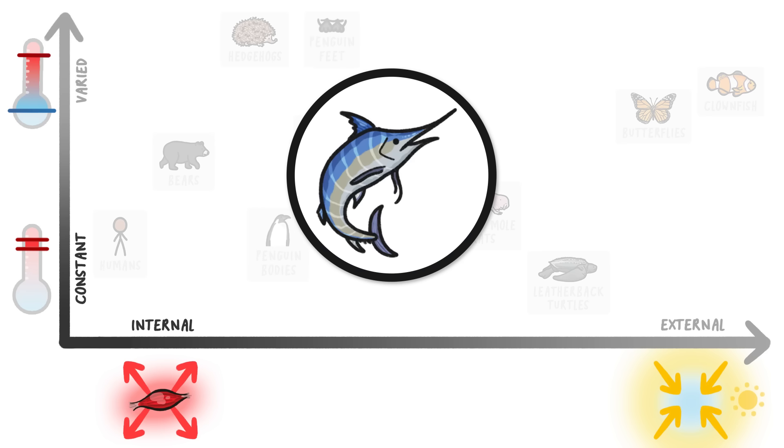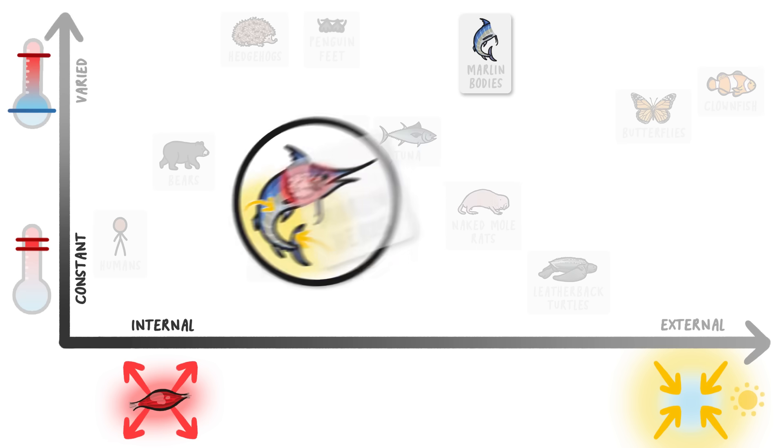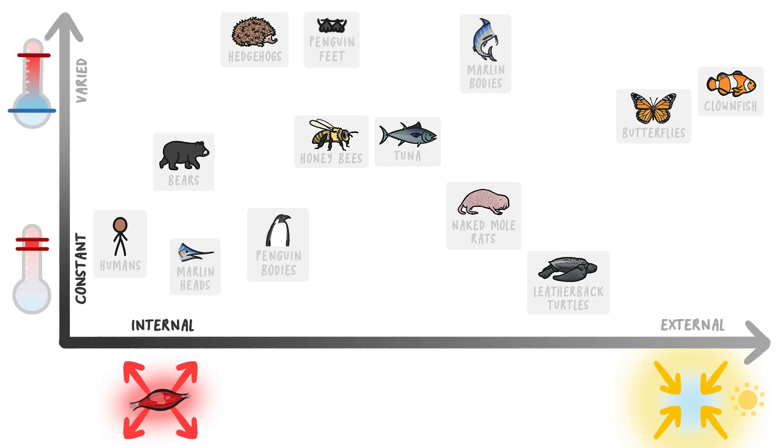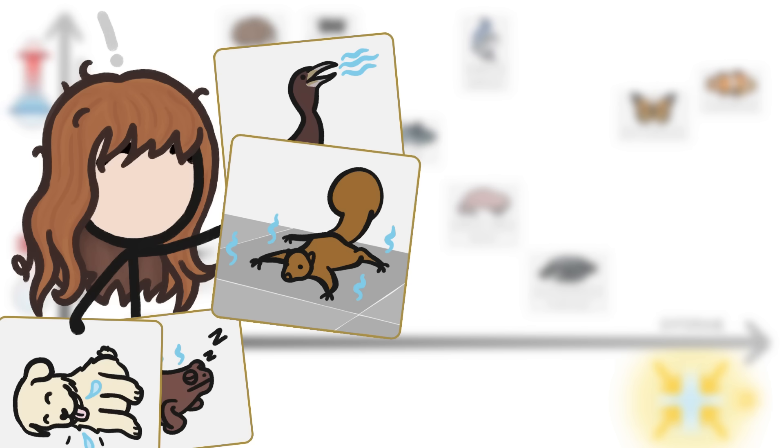And marlins have co-opted optical muscles to keep their big eyes and brains warm, while the rest of their bodies get cooler and warmer based on their surroundings. So their bodies are here, while their heads are here. And that's without even getting into other aspects of temperature regulation, like all the different ways that animals cool themselves.